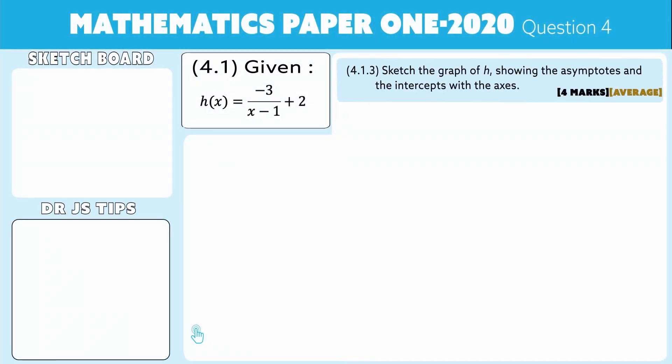Question 4.1.3 is now asking us to sketch the graph of H, showing the asymptotes and the intercepts with the axes.